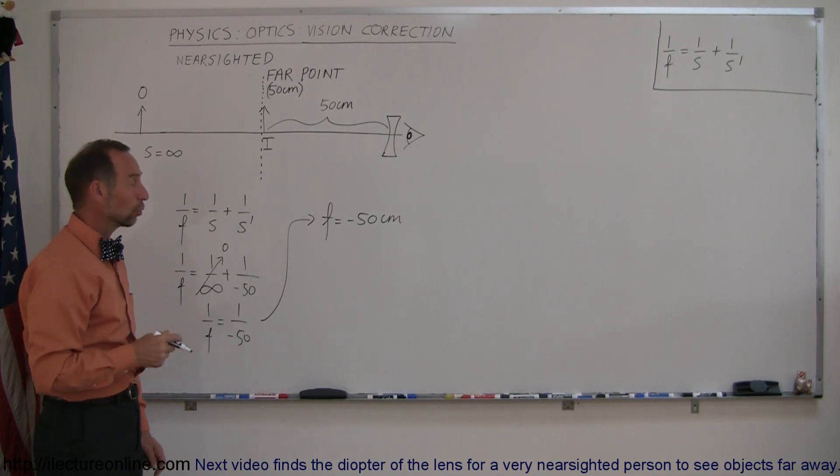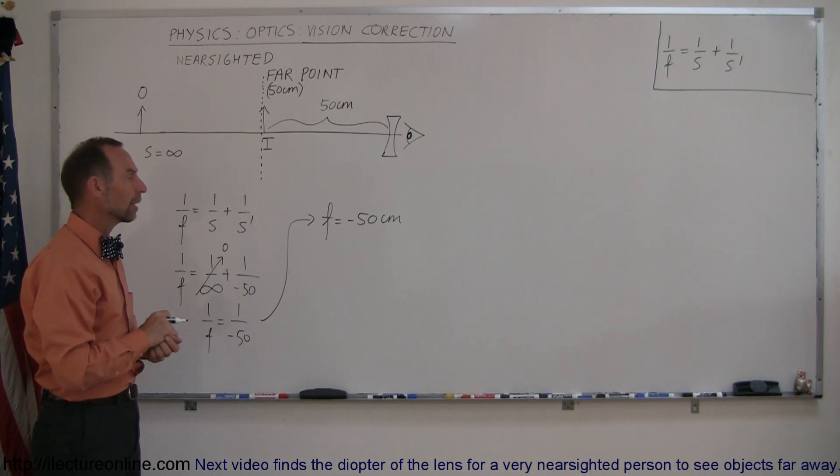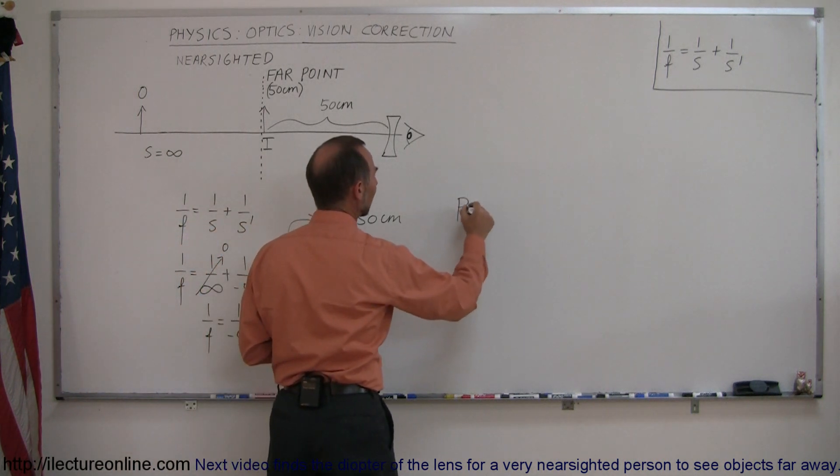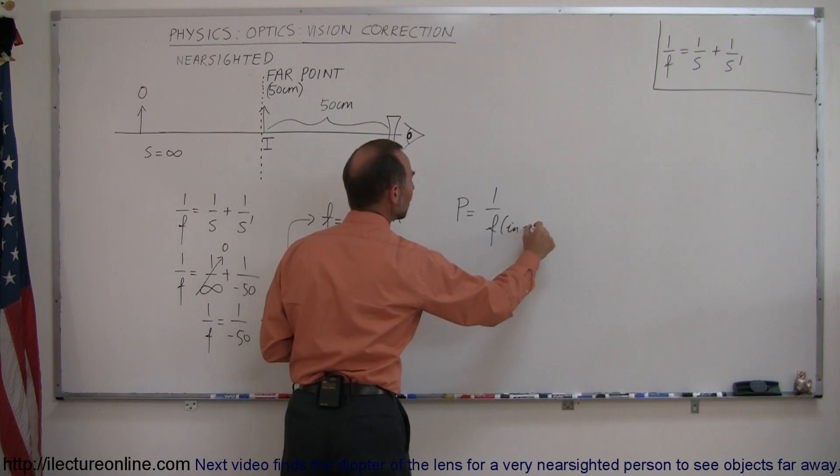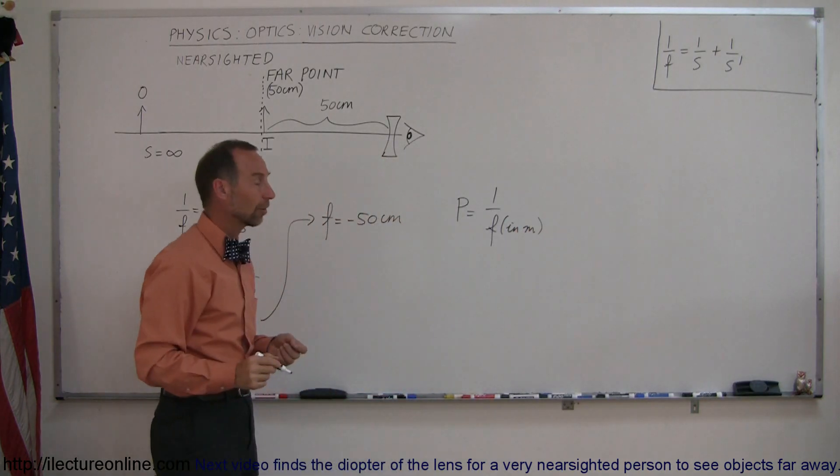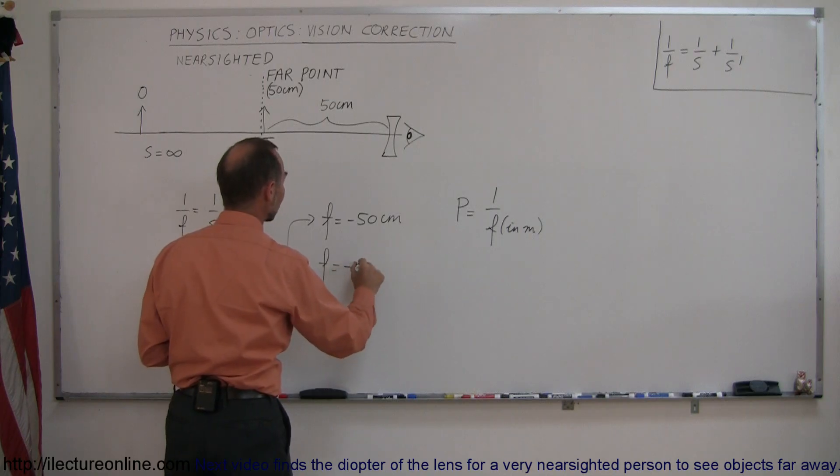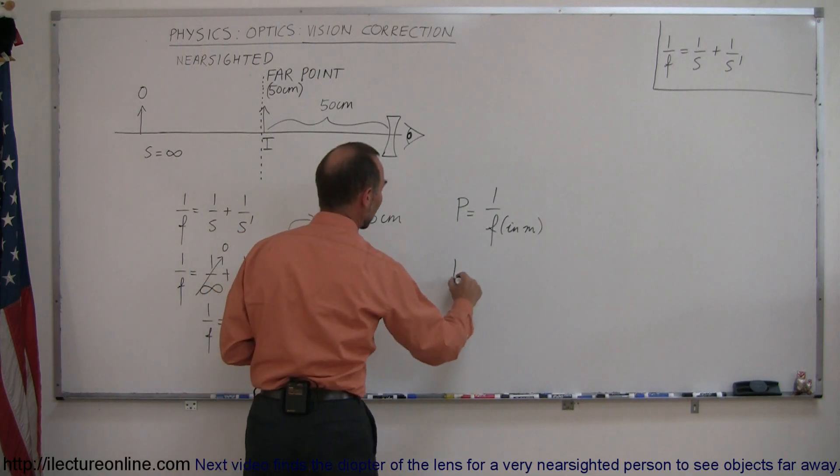Now usually when you go to a store and say I need some corrective vision lenses, you don't tell them what kind of focal length you need. You tell them what the power of the lens is. So the power of the lens is equal to 1 over the focal length when the focal length is written in meters, in the standard unit of length. So that means that we have to convert this to meters, so f is equal to minus 0.5 meters.